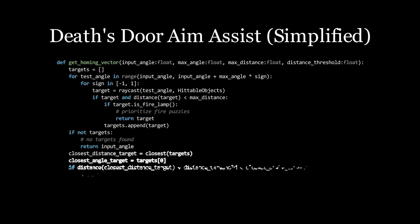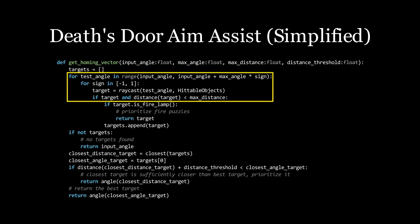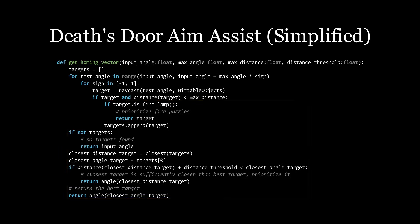In Death's Door, the aim assist is formulated in the exact opposite order. It first asks, what are the hittable objects closest to the player's aim direction, then which one is the player most likely to want to hit.